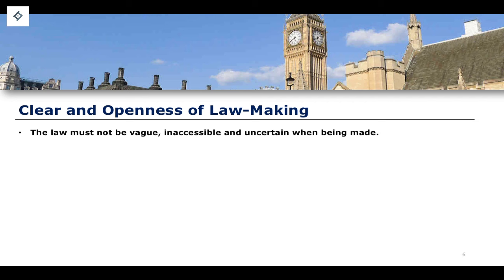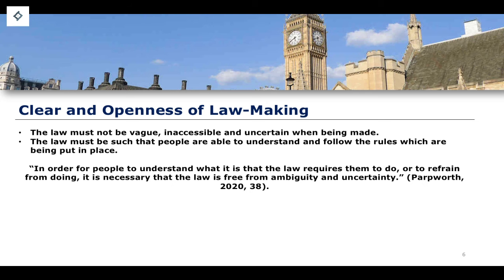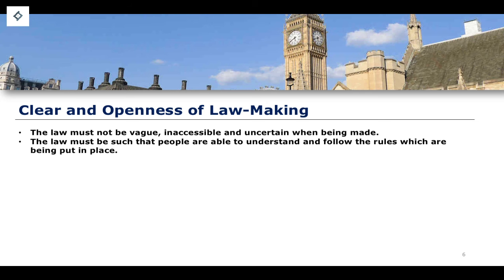Regarding openness in law-making, the law must not be vague, inaccessible, or uncertain. The law must be such that people are able to understand and follow the rules being put in place. There should be no convoluted or inaccessible ways in which the law operates. This fits into the broader logic of law — law should be logical, coherent, and clear. This is why, when people say law is very complicated, the point is that law is supposed to be clear, accessible, and certain.